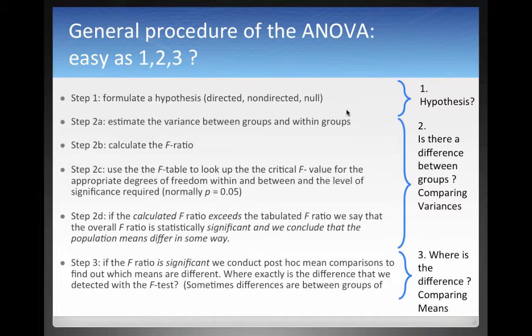You can think of the ANOVA as having three different steps. First step would be formulate the hypothesis. Second step would be to calculate if there's a difference between groups, comparing variances. For that purpose we first estimate the variance between groups and the variance within groups, and then we compare that to each other. Variation between group divided by variation within groups gives us the F-ratio.